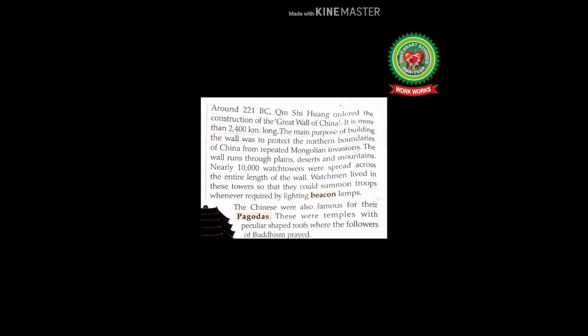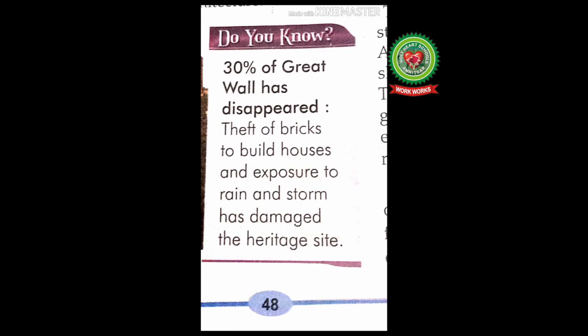Now let's read the 'Do You Know' box. 30% of the Great Wall has disappeared. Theft of bricks to build houses and exposure to rain and storm has damaged the heritage site. Bricks of the wall have been stolen by people to build houses, and rain and storm have also destroyed the heritage site.